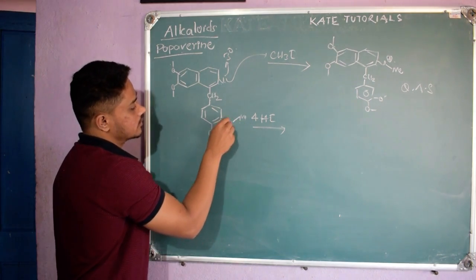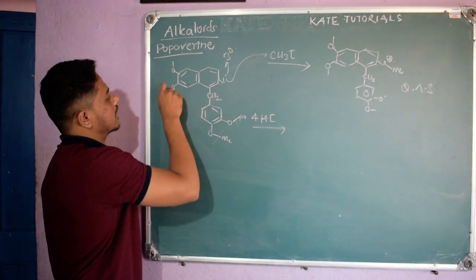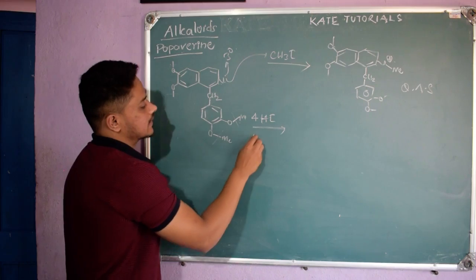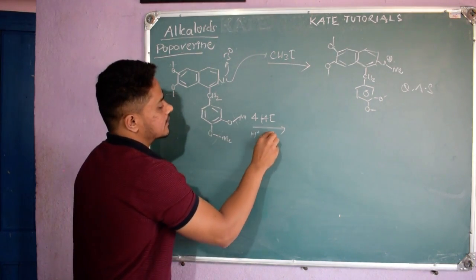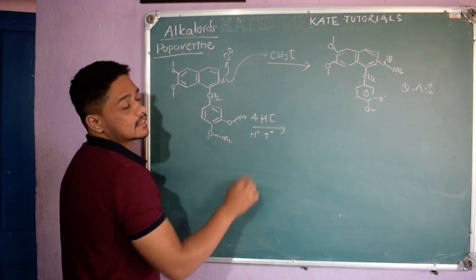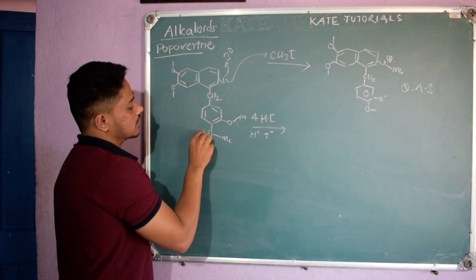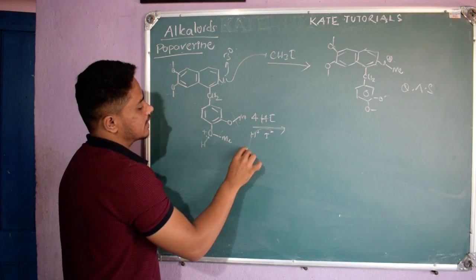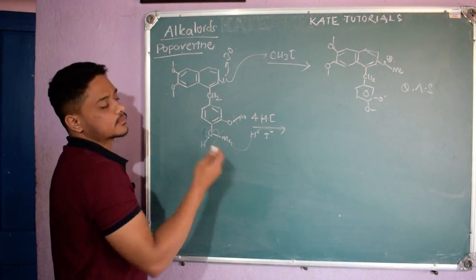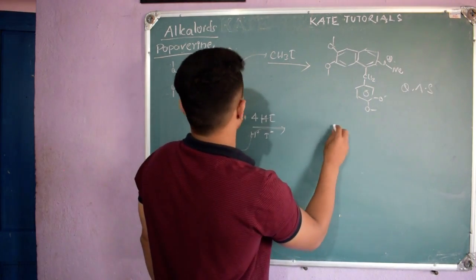The O–CH₃ bonds will be broken — all four O-methyl bonds. HI means H⁺ and I⁻. The oxygen's lone pairs attack H⁺ to form an O–H bond, and oxygen gets a positive charge. Then I⁻ takes the methyl group, the electrons go back to oxygen and it becomes neutral. So we get the demethylated product.